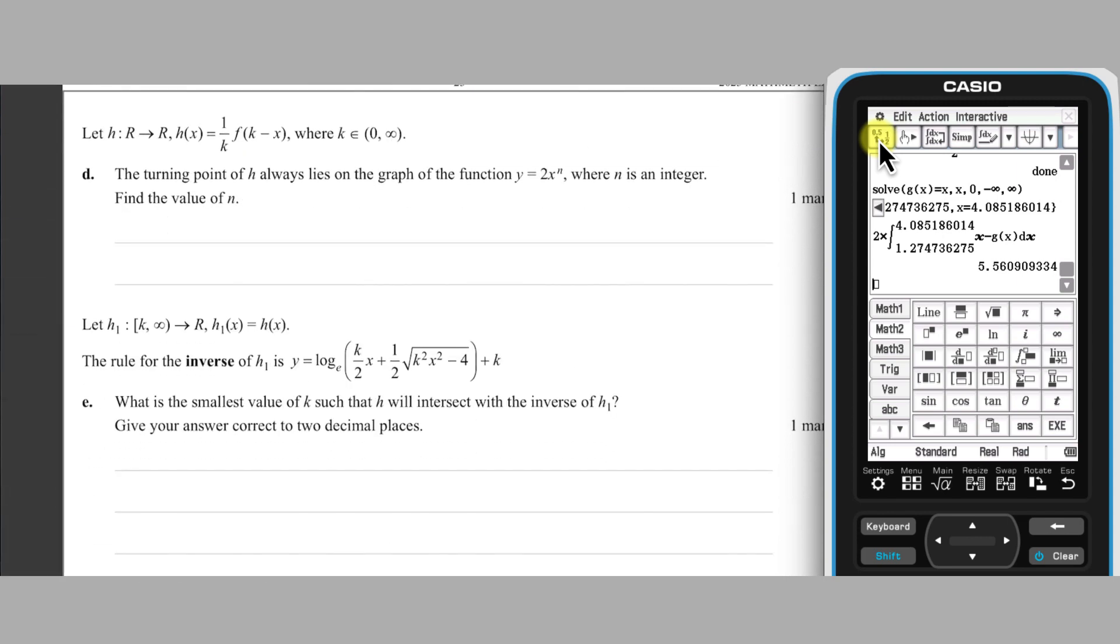Now this question moves to H of X, which is a generalised version of G of X. Part D asks about the turning point of H of X. Using similar transformational thinking to parts A and B.